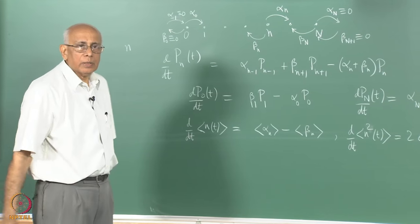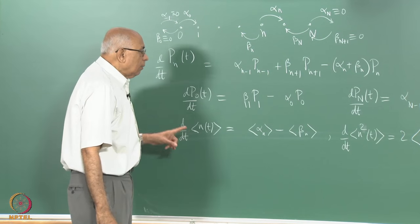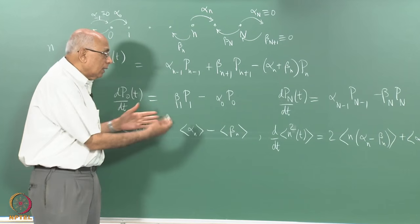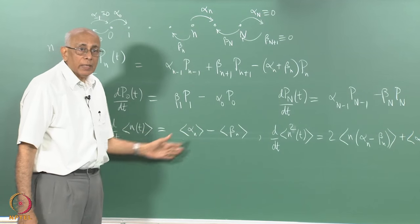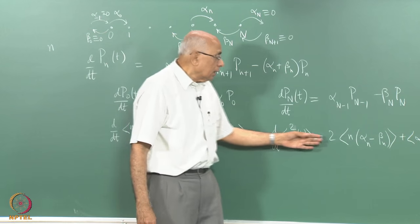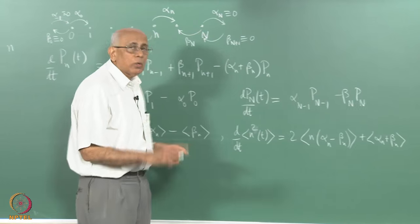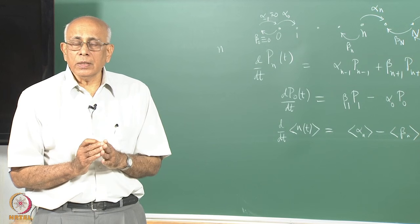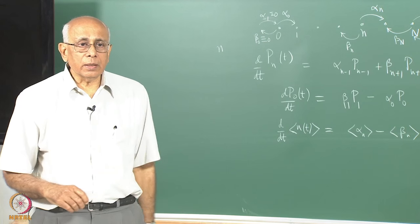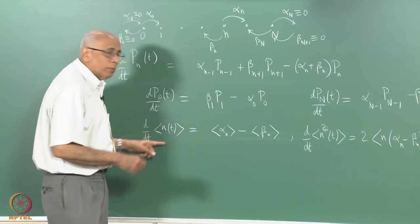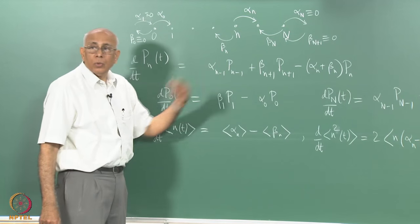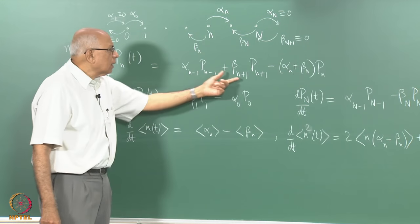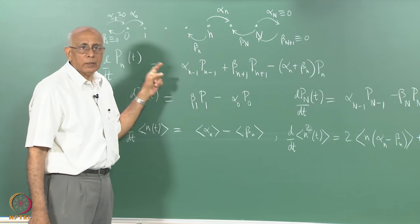Those two equations are valid in general for arbitrary alpha_n and beta_n. In the special case where alpha_n is a linear function of n and so is beta_n, the right-hand side involves only the average of n, and similarly for n². This gives a closed set of equations that can be solved with whatever initial conditions — for instance, starting in state n_0 with p_n as a delta function at n = n_0.